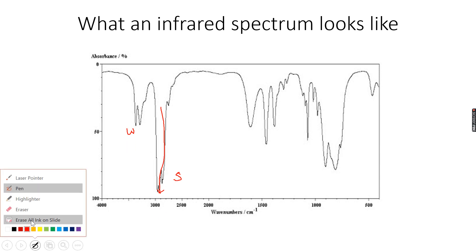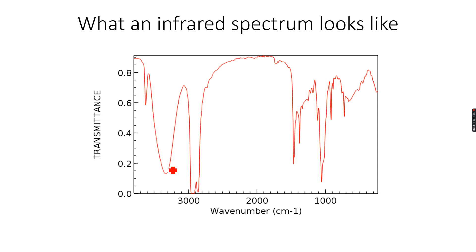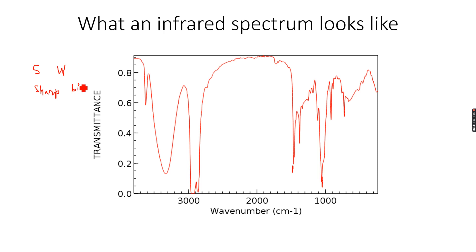Peaks can also be broad or they can be sharp. Looking at the spectrum, this peak is very narrow — the correct word to use is sharp. This other peak, as you can see, is very broad. So a peak can be strong and sharp, or strong and broad. This peak here is strong and broad, and this peak is strong and sharp.